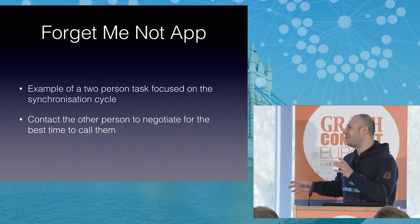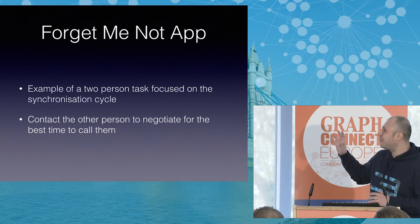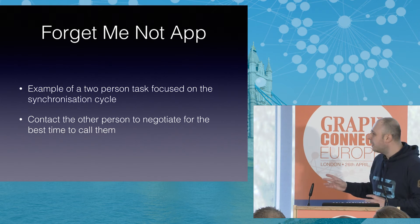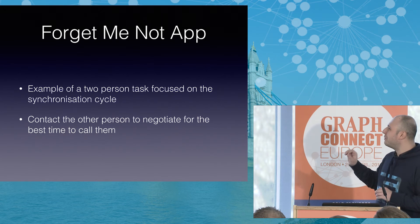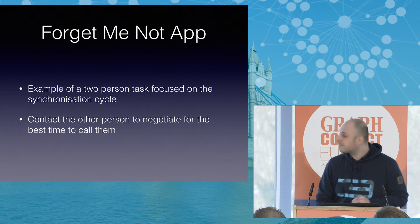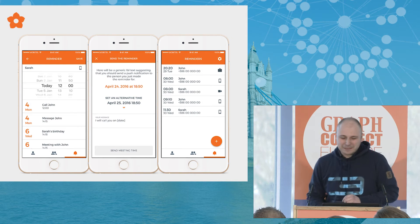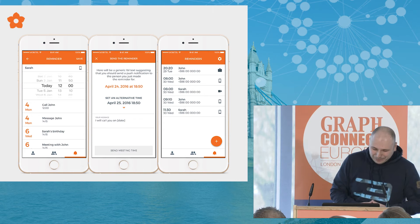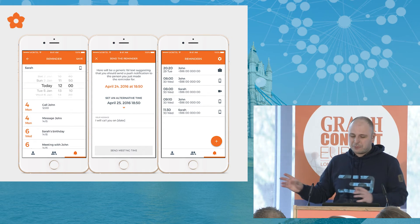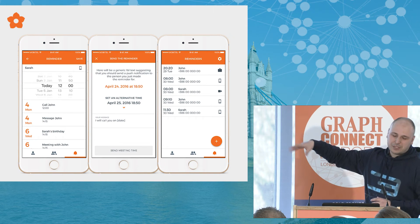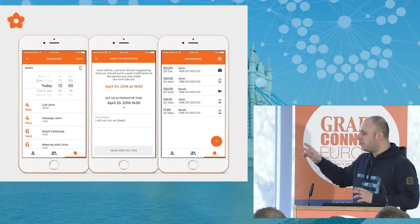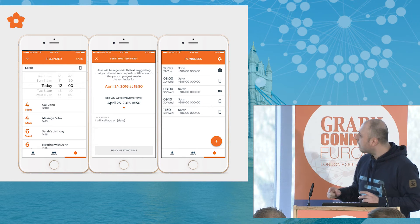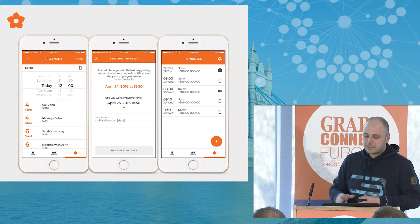This is the database concept, and this is a true application we have developed. It's a forget-me-not app, just for iPhone. It's an example of a two-person task focused on the synchronization cycle, and the application does only this: you contact the other person to negotiate for the best time to call them. On the first screen you would like to arrange a call with the customer and send her two possible dates for the call — we can also check our calendar. On the second screen we add the message, and then she can accept or propose a new date. It's like a synchronization cycle between John and Sarah. When agreement is reached, both get a notification 15 minutes prior to the call.